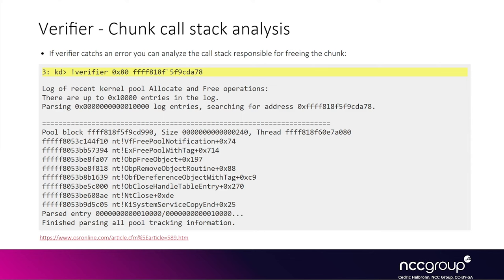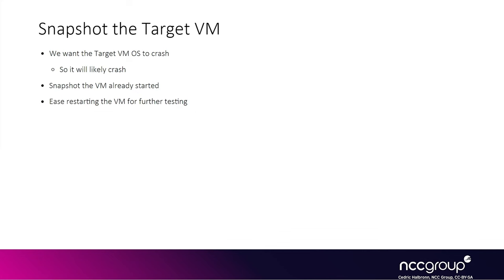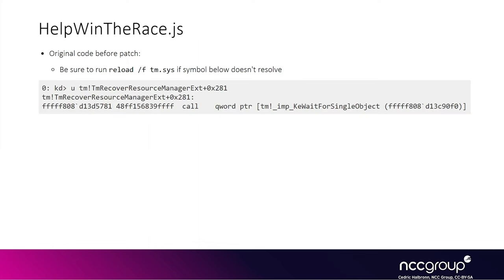It will tell you that a specific address was freed by other code. And if you see in the debugger that it tries to reuse that memory, you are basically watching a use-after-free. We will also want to take a snapshot of the VM booted with Verifier enabled, because the whole point of enabling Verifier is to detect a crash, so the VM is likely to crash many times while testing. Once we have made a snapshot, we will be able to just restore it without having to reboot the VM or reattach the debugger.